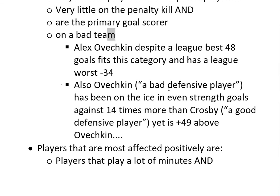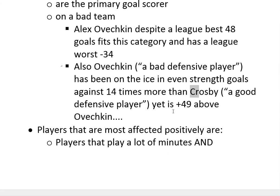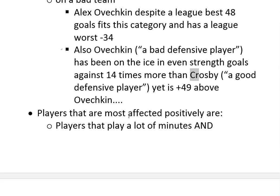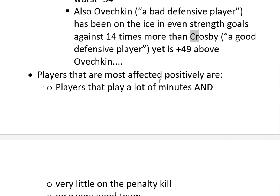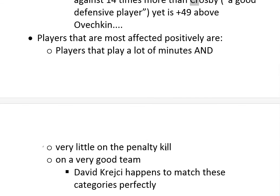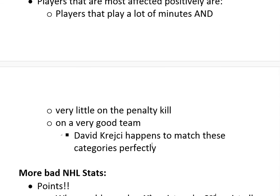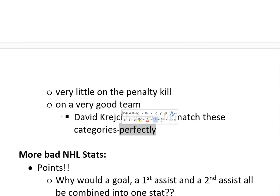As that stat showed, Ovechkin — considered a bad defensive player — has been on the ice for even-strength goals against only 14 times more than Crosby, who is considered a good defensive player. Yet Crosby is plus-49 above Ovechkin. That's 14 more goals against when your team is 18th versus 5th — and Crosby is still plus-49 above, which is absurd. Players most positively affected are those who play a lot of minutes, very little on the penalty kill, and are on a very good team — which is exactly David Krejci.